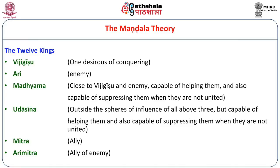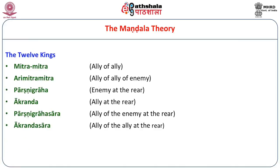Then there are Mitra (an ally) and Arimitra (friend of the enemy) — these are the six basic types of kings. Another six are: Mitra Mitra (friend of friend), Arimitra Mitra (friend of the friend of enemy), and then more technical names: Parshni Graha (enemy at the rear), Akranda (friend at the rear), Parshni Graha Sara (friend of the enemy at the rear), and Akranda Sara (friend of the friend at the rear). The rest of the eight are in the forward direction. So we have 12 types of kings.